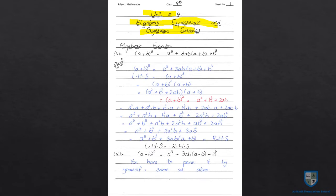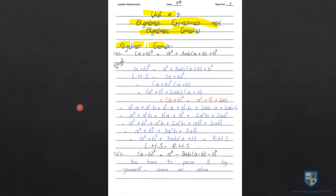First of all, we look at the algebraic formulas for question number 6 to question number 9. In these questions, we have to use algebraic formulas and we will have to prove them. That formula is given in your book on page number 84, but some of the formulas are listed without proofs — just the formula.